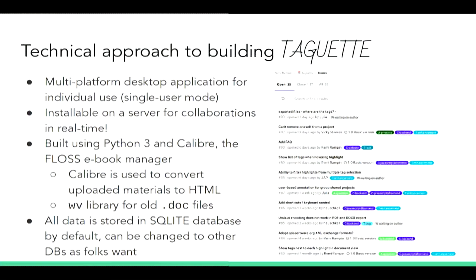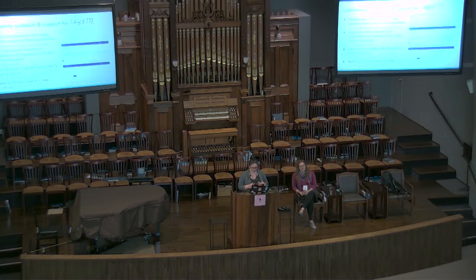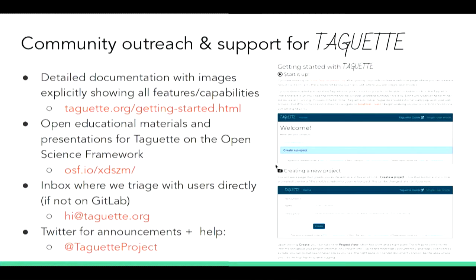Tagit is a web-based application so you can use it on any desktop, you can install it on a server. It's built with Python and Calibre. All the data is stored in a SQLite database, so it's provenance aware. This was born out of a need in the community for a lack of open source qualitative work, and so we've tried to help this community by making intensely commented and image-heavy documentation. We have open educational materials, and people email us with their errors all the time — which is very cool — and some tweets as well.